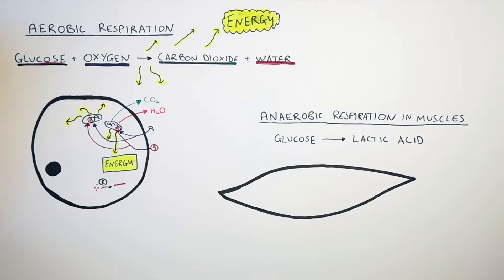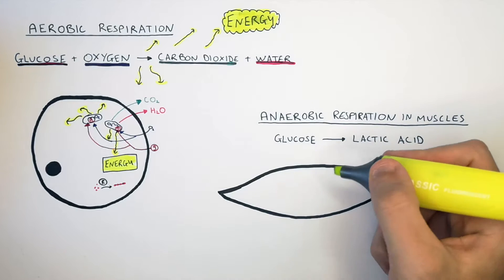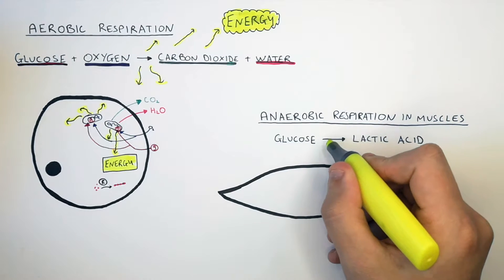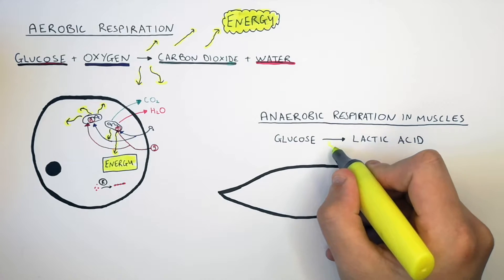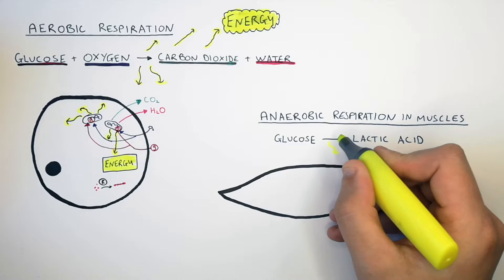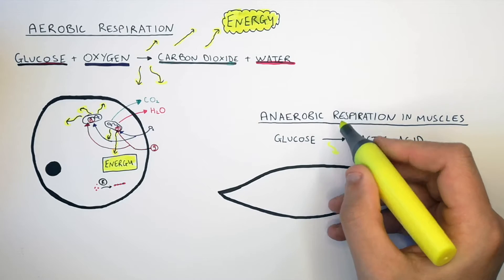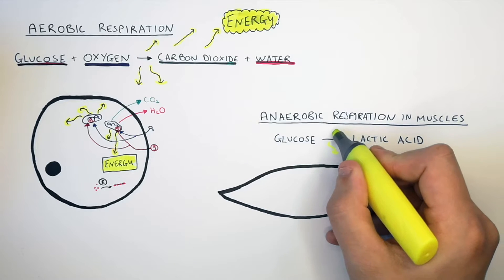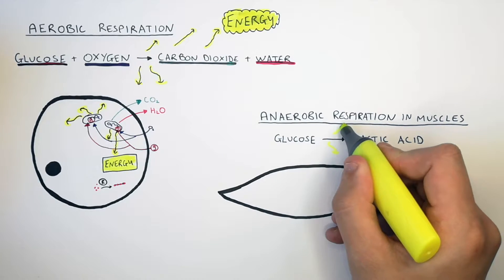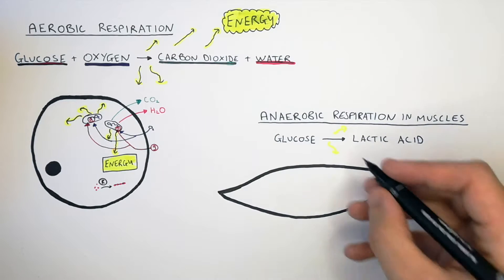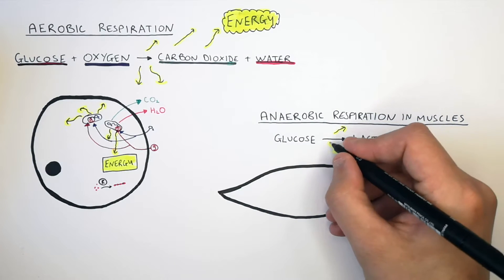There is also an energy release during this reaction because it is an exothermic reaction. However, because it is incomplete combustion, the amount of energy that is released from the mitochondria during anaerobic respiration is less than aerobic respiration.